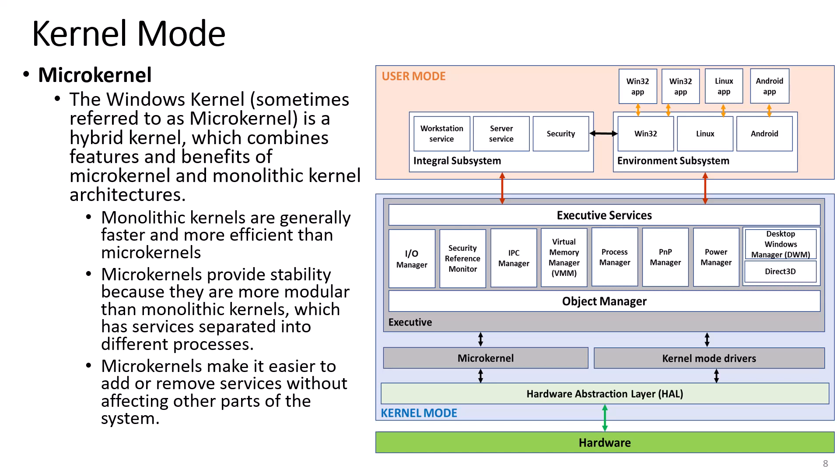Monolithic kernels are generally faster and more efficient than microkernels. Microkernels provide stability because they are more modular than monolithic kernels, which has services separated into different processes. Microkernels make it easier to add or remove services without affecting other parts of the system.